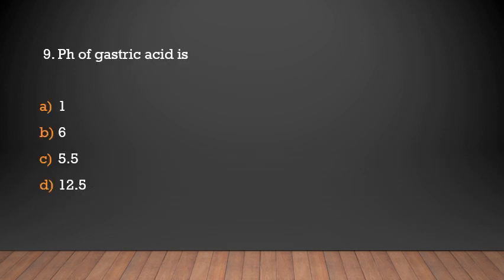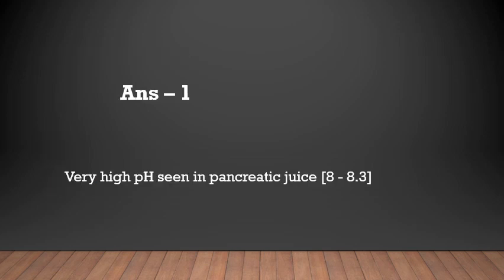pH of gastric acid is: 1, 6, 5.5, or 13.5? Answer: 1. Very high pH is seen in pancreatic juice — it is about 8 to 8.3.